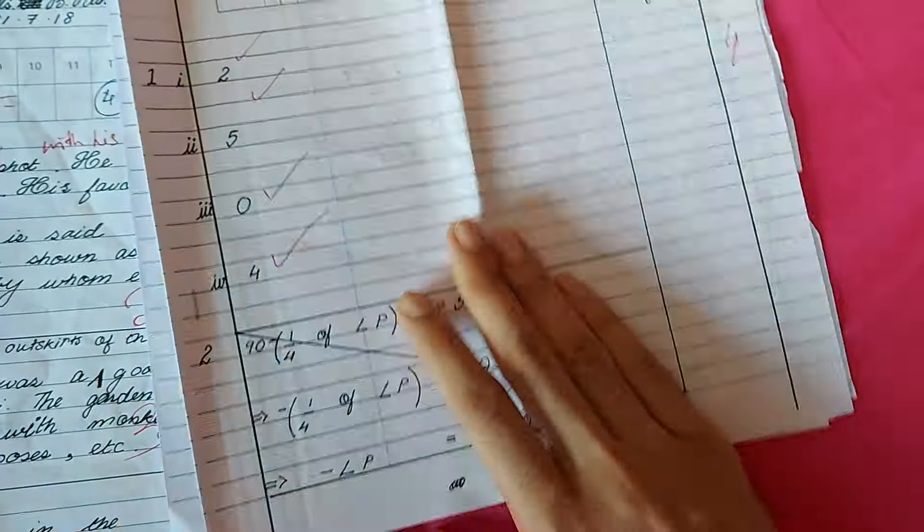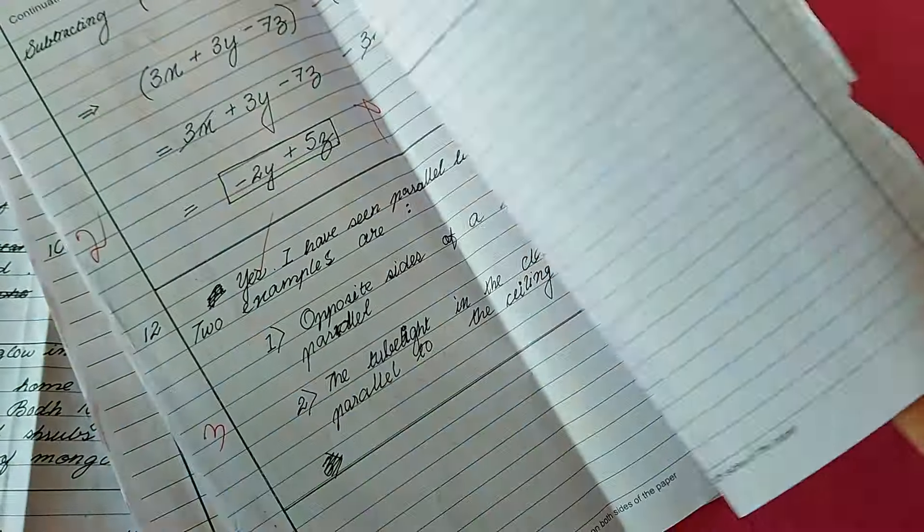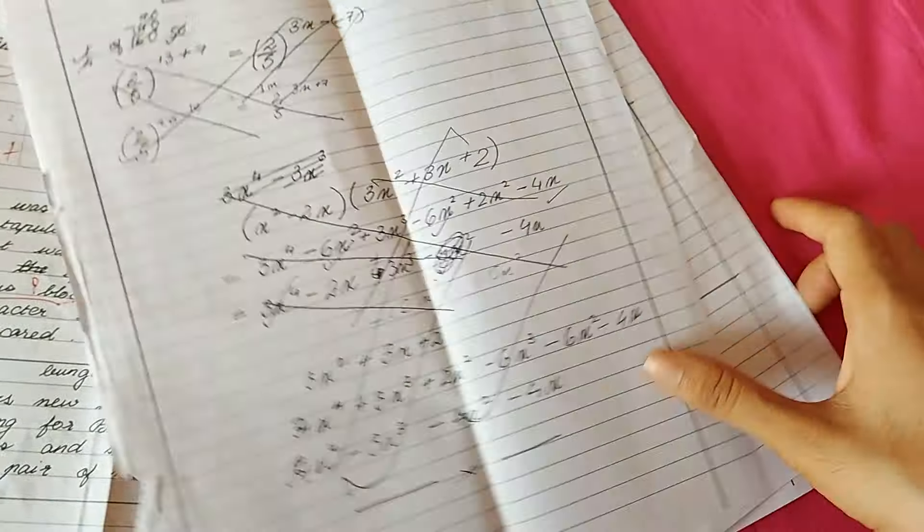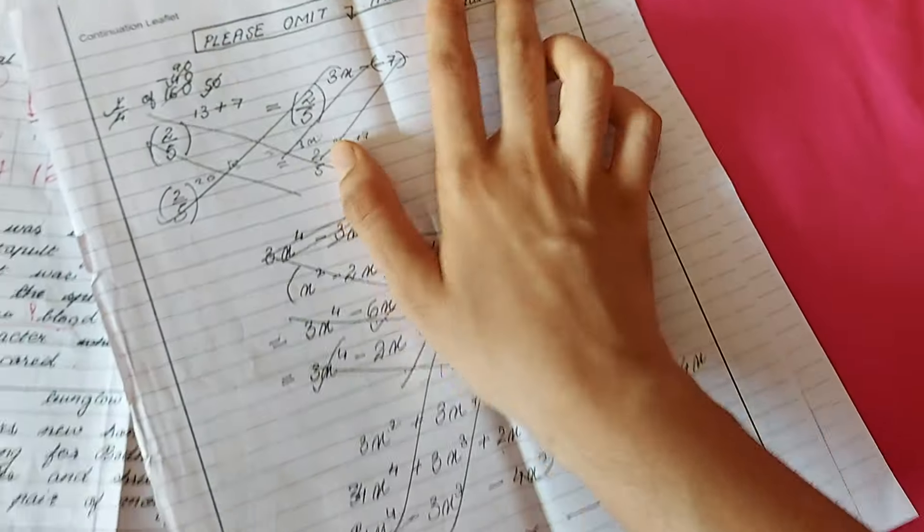What I would do for maths, I would solve the entire question paper once. When I'm done with the paper and I have a lot of time left, then I would just solve it again. But this time I would just do it in rough, and I would write on top, please omit this page. Thank you.